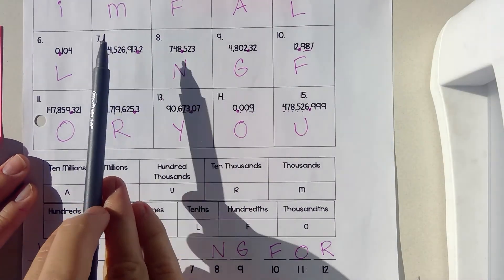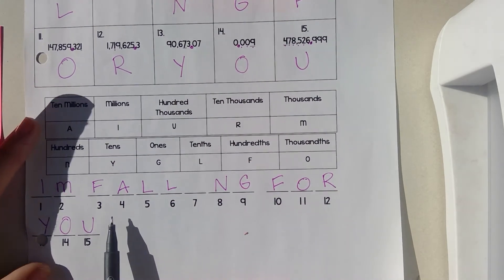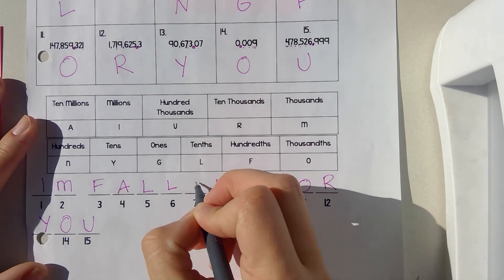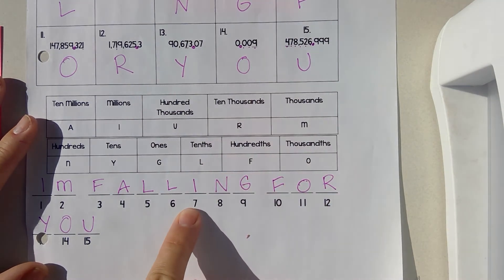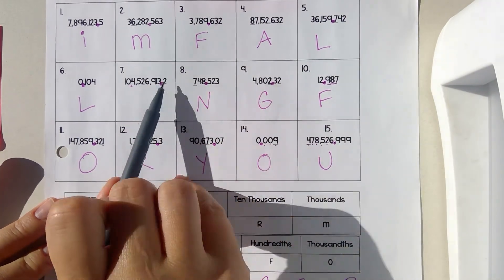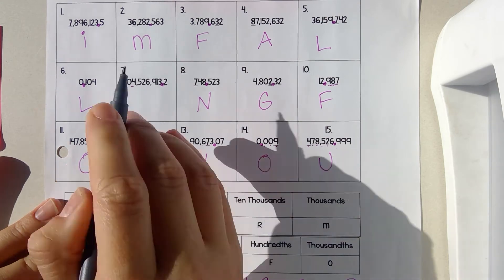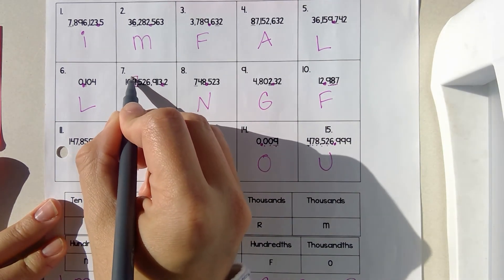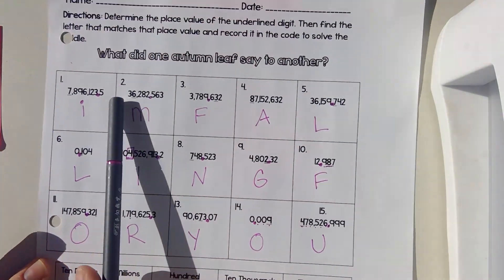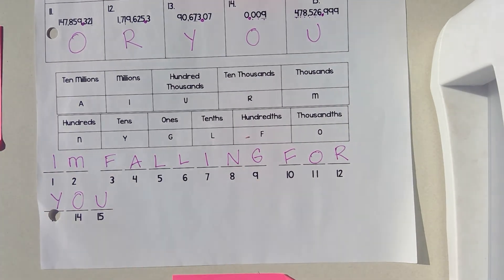Going back to number seven — I was pretty sure the four was the intended underlined digit. Looking at the phrase, it spells out 'I fall for you,' so that would be an I. If we look at the decimal: ones, tens, hundreds, thousands, ten thousands, hundred thousands, millions — the four is in the millions place. So the four should have been underlined to make this an I. What did one autumn leaf say to another? I'm falling for you.